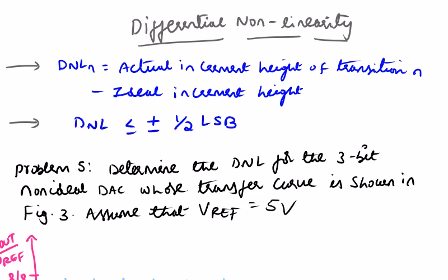If the above condition fails to be satisfied, then the corresponding DAC cannot be called N-bit accurate. Now let us solve a problem on this.